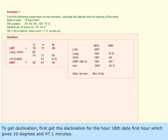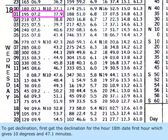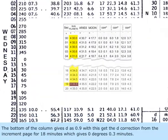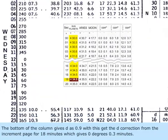To get declination, first get the declination for the hour, 18th date, first hour, which gives 10 degrees and 47.1 minutes. The bottom of the column gives D as 0.9.